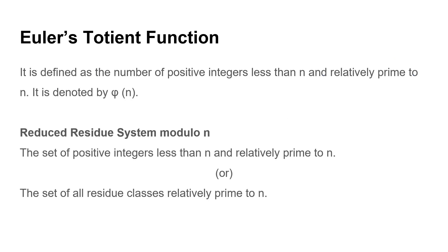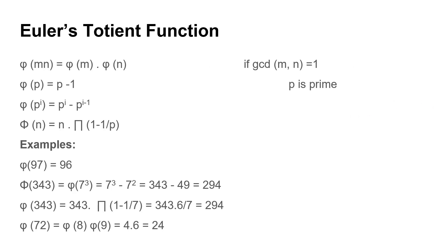The next algorithm is the Euler-Totient function. It is defined as the number of positive integers less than n that are relatively prime to n, denoted phi(n). It can also be described as residue classes relatively prime to n. Under the Euler-Totient function we have four cases. phi(m×n): if m and n are prime, this equals phi(m)×phi(n), which simplifies to (m−1)(n−1). If a number is prime, phi equals that number minus 1. If the number is not prime, we check the remaining cases.